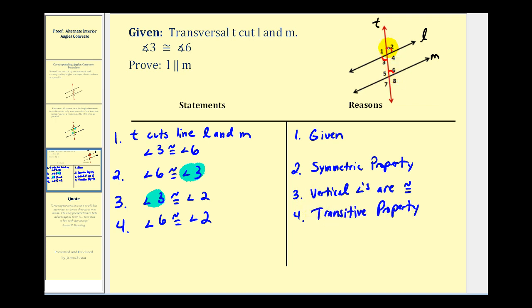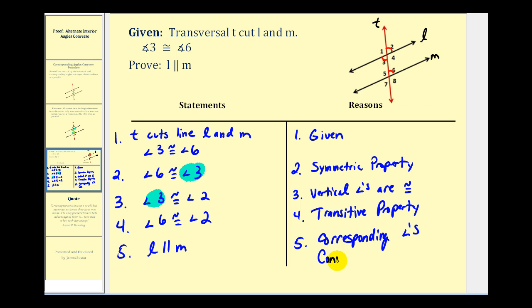And if we know that angle six and angle two are congruent, these are corresponding angles, and therefore the lines are parallel from the corresponding angles converse postulate. This is one possible proof that if we have a transversal that cuts two lines and the alternate interior angles are congruent, the two lines would be parallel. I hope you found this helpful.